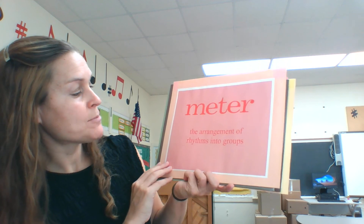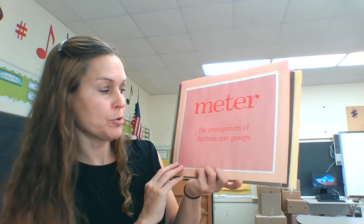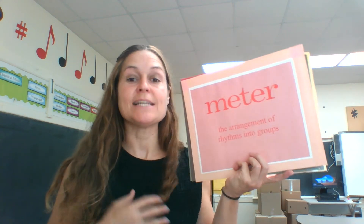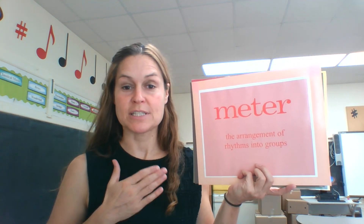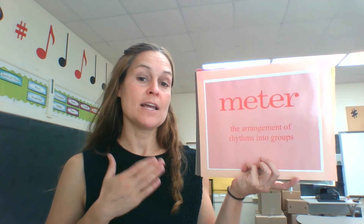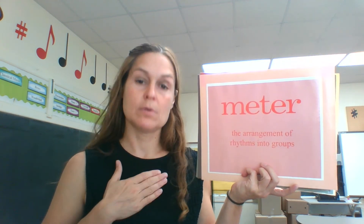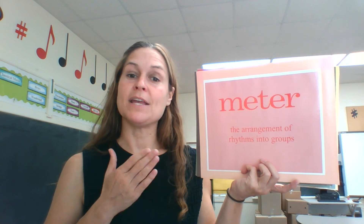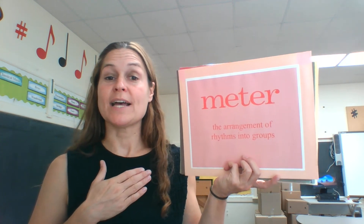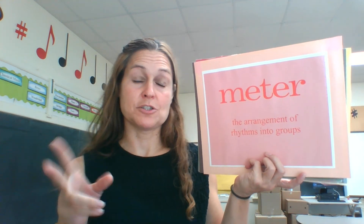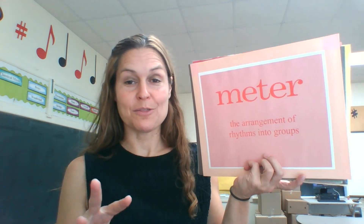Meter is the arrangement of rhythms into groups. If you're listening to music, the first thing you want to do is keep the steady beat and feel it. You might feel it in twos — one, two, one, two — that would be meter in two. Or sometimes you feel it in threes — one, two, three, one, two, three. So you're going to feel the meter in threes. It's usually either in twos or in threes.